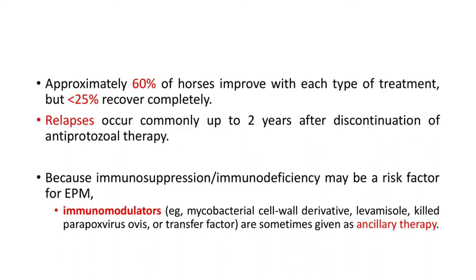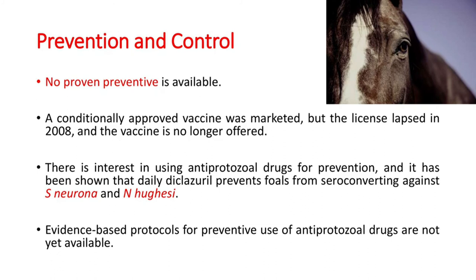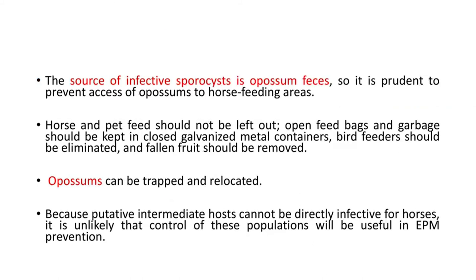Regarding prevention and control: no proven preventive is available. A conditionally approved vaccine was marketed but the license lapsed in 2008 and the vaccine is no longer offered. There is interest in using antiprotozoal drugs for prevention, and daily diclazuril has been shown to prevent foals from seroconverting against Sarcocystis neurona and Neospora hugesii. Evidence-based protocols for preventive use are not yet available. Since infective sporocysts come from opossum feces, it is prudent to prevent opossum access to horse feeding areas.